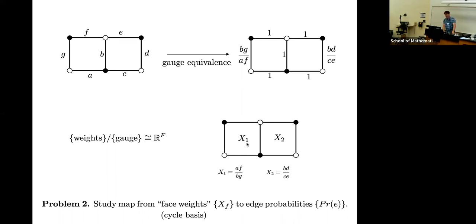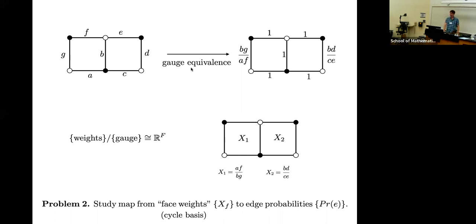Let me call those new variables X, one for each face. On almost all my graphs in this talk are planar, so for each face of the graph I'm going to have a single positive real number called the face weight. How is it related to the original weights? It's the alternating product. If I go around the cycle counterclockwise starting from a white vertex, I see the edge weights a, b, f, g, and the corresponding face weight is just the alternating product: a divided by b times f divided by g. Likewise for X2. So I've reduced myself from this seemingly seven-dimensional space of weights to really only a fundamentally two-dimensional problem.